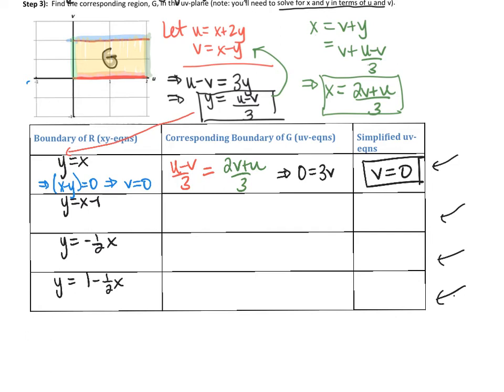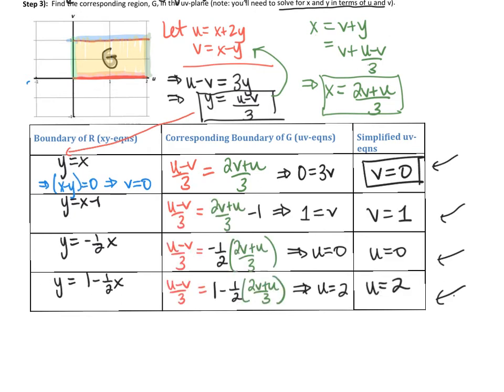And we did that above because we saw they all happen to be just lines in this case, so we're just going to be sketching or integrating over a rectangle. But you'll see other examples on the homework where it's not necessarily a rectangle. So here is this filled in, and it leads us back to the region G that we already found, and now we're ready to set up our integral.